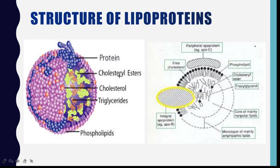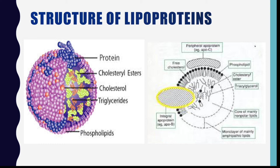Structure of lipoprotein. These lipoproteins have a complex molecule made up of a lipid core consisting of triglyceride and cholesterol ester, which is surrounded by a shell of apoproteins, cholesterol and phospholipids. In this shell, the apoproteins, phospholipids and cholesterol are oriented such that their polar heads are exposed on the outer surface of the lipoprotein.